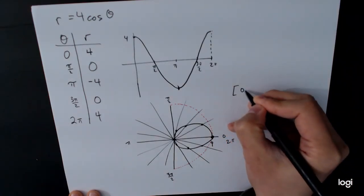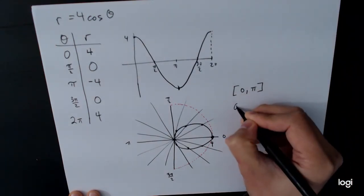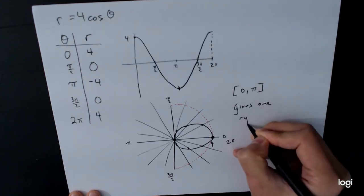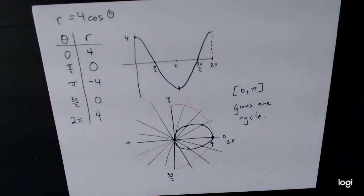And so the interval 0 to pi gives one cycle. Now, depending on the formula, sometimes you have to go all the way around from 0 to 2 pi. Sometimes you don't. It's very much working with the information you have. Don't try to memorize a bunch of formulas. Just look at the information you have and work with it.